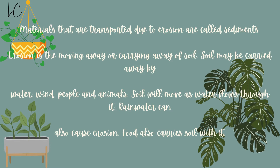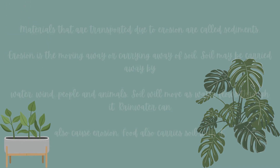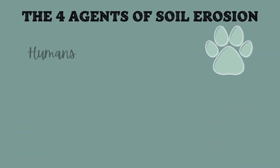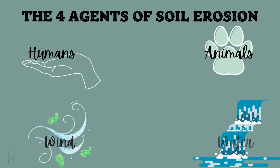Soil may be carried away by water, wind, people, and animals. Soil will move as water flows through it. Rainwater can also cause erosion. Flood also carries soil with it. There are four agents of soil erosion: people, animals, wind, and water.